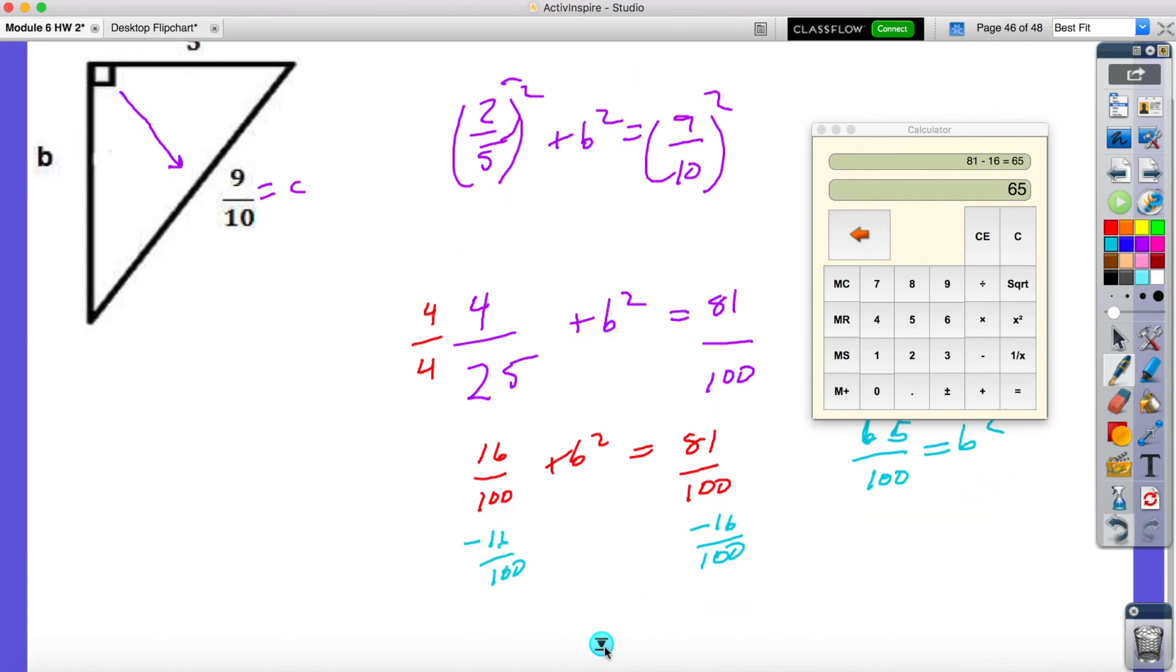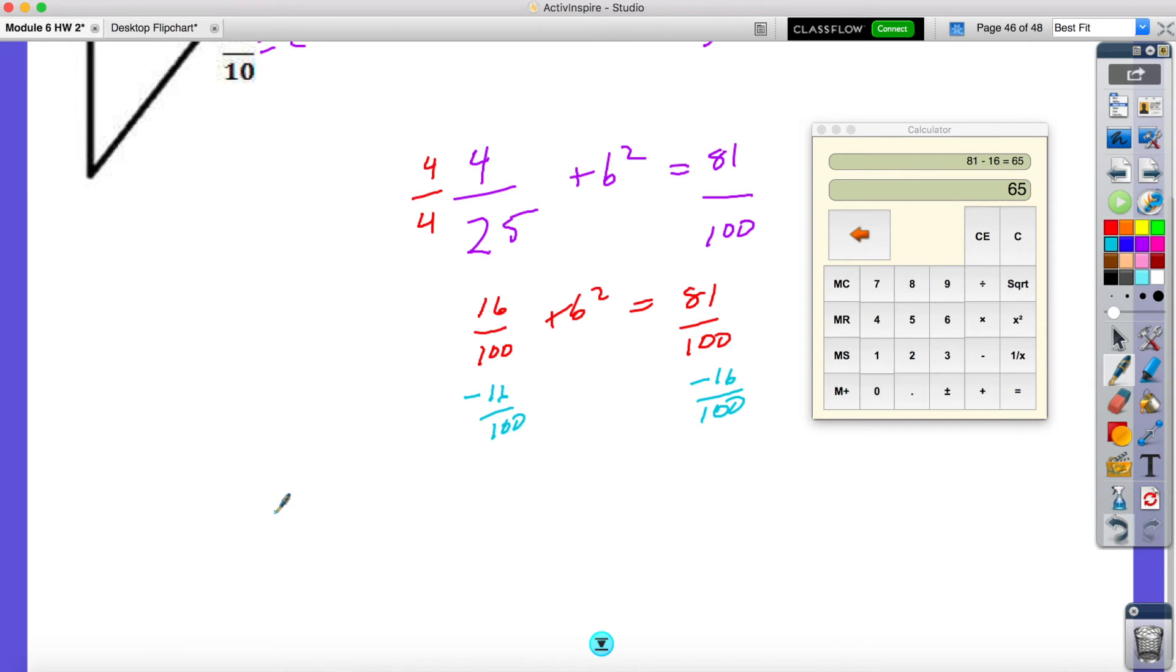All right, so I'm going to scroll down just a little bit so I have more room. So if I have 65 over 100 equals B squared, all I need to do is take the square root of both sides. And when I take the square root of a fraction, you have to do it to the numerator and the denominator. So I'm going to have the square root of 65 all over the square root of 10 is 100.